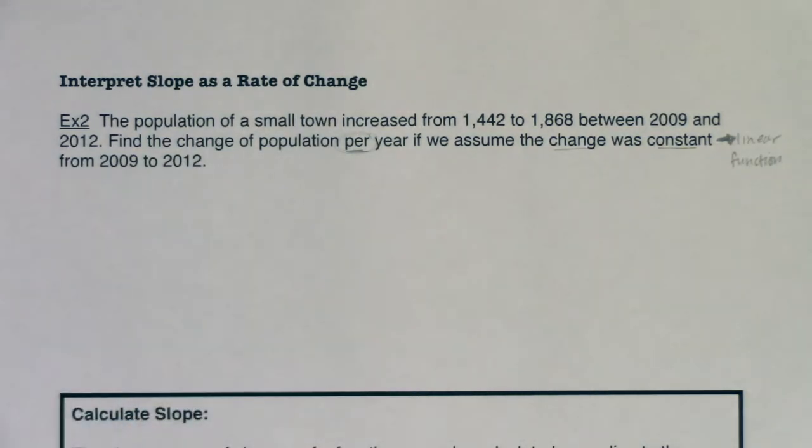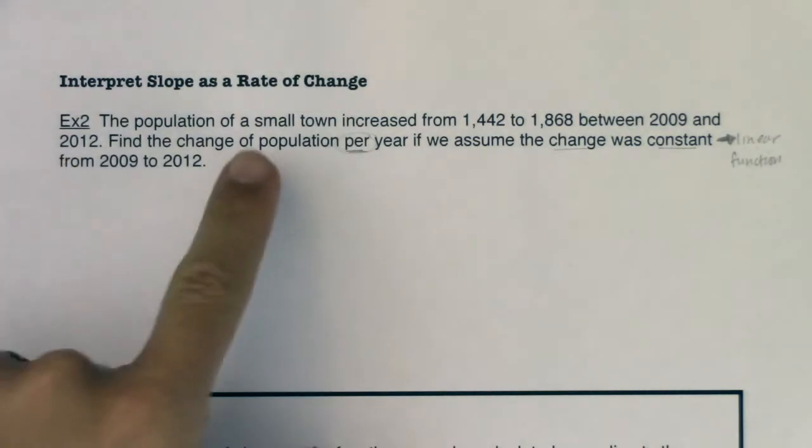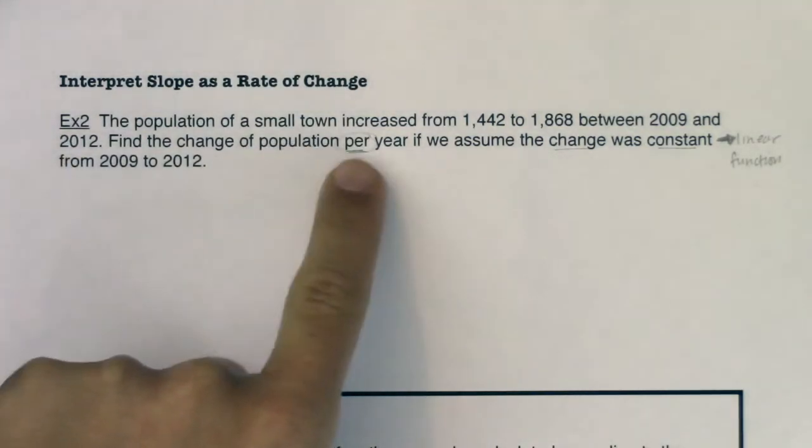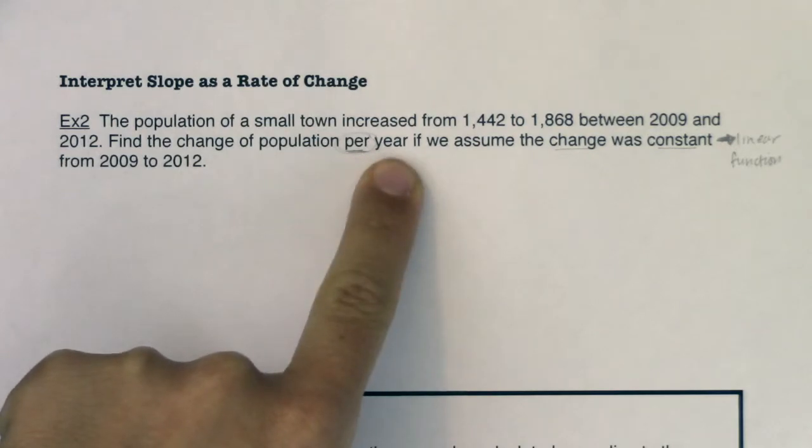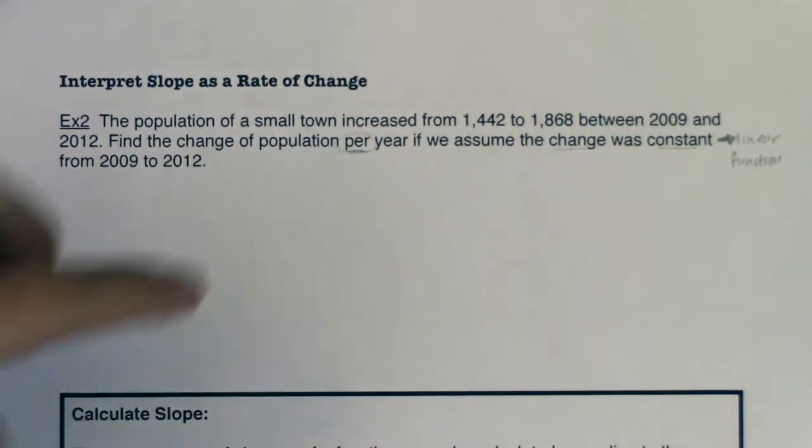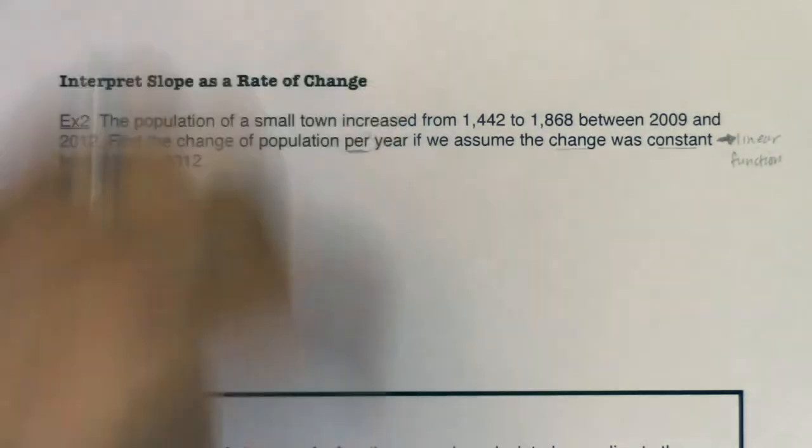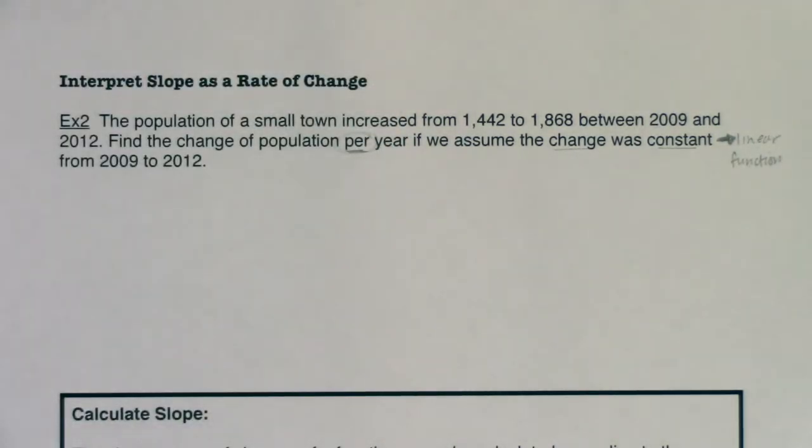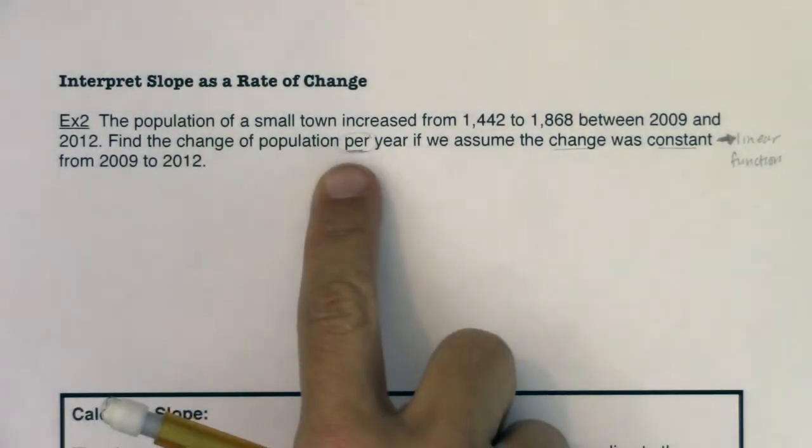Now when it says find the change of population per year, that phrase 'per' right there is trying to hint at you: hey, I'm interested in a slope. I want the change in y in ratio to the change in x. Change in y over change in x, or change in population per year. Anytime you hear 'per', that's like a little buzzword that we're talking about the slope. So I would like to find the